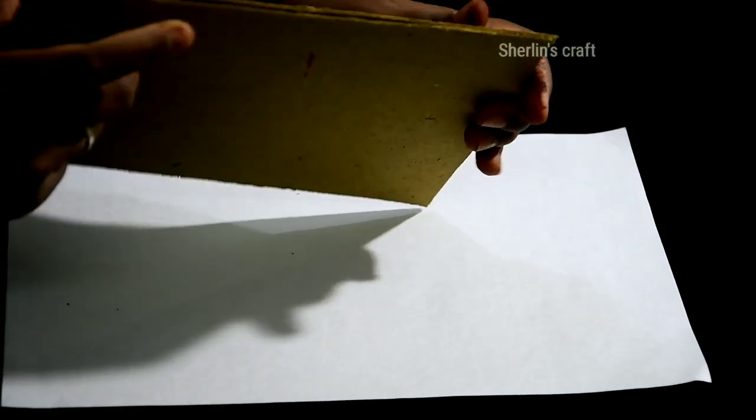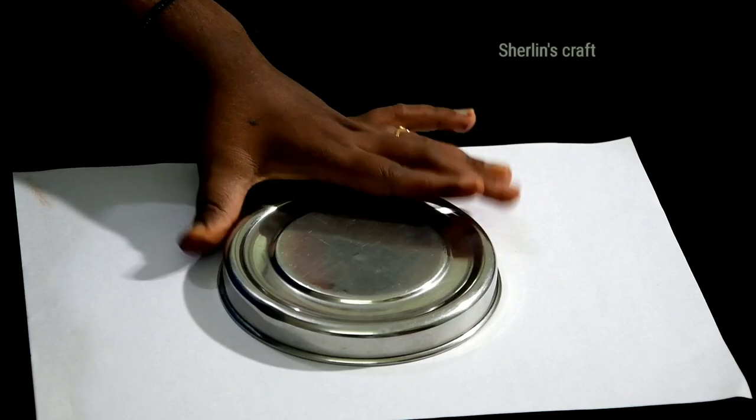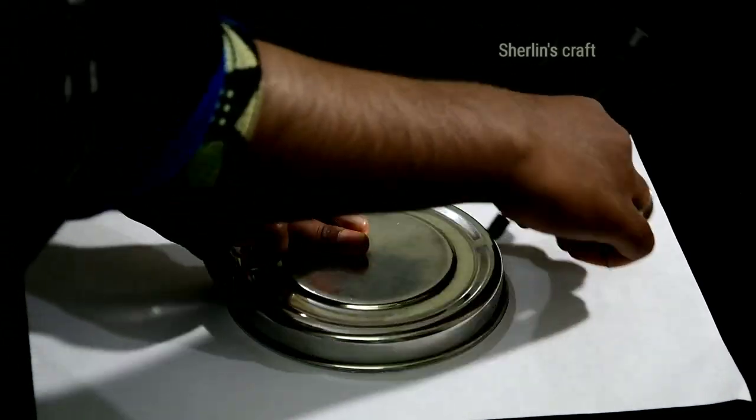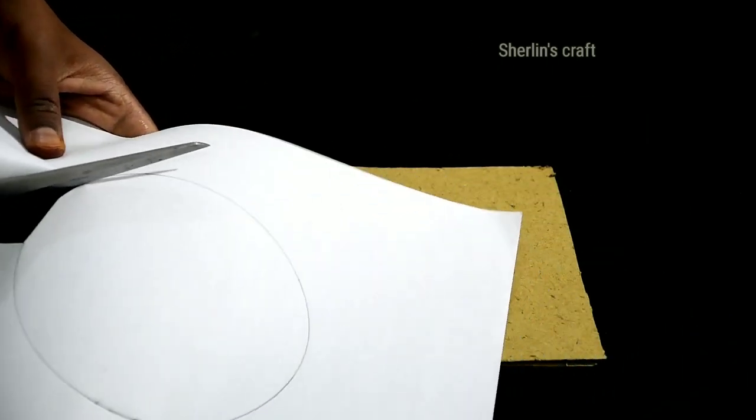We have cut two cardboard in square shape. This is a white color sheet. We will put a round box on this. You can also use a compass. Let's cut the circle.